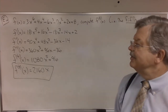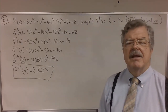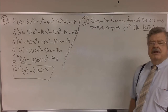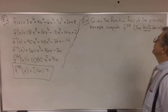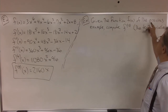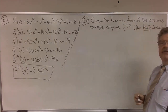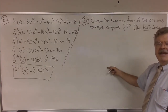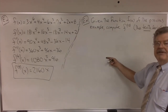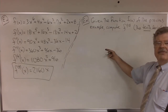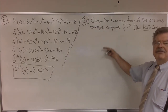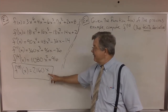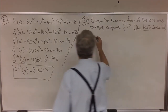So that's how we do higher-order derivatives. But let's look at a related example. Given the function f of x from the previous example, compute the 10th derivative. Well, to do this we need the 9th derivative, and to get the 9th we need the 8th, and to get the 8th we need the 7th, and to get the 7th we need the 6th, and to get the 6th we need the 5th. And we have that, don't we? We have the 5th derivative, so we can start with the 6th derivative here.